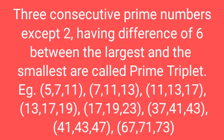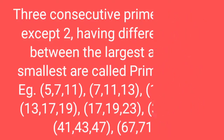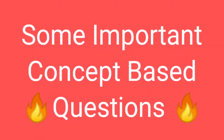Examples of prime triplets: (5,7,11), (7,11,13), (11,13,17), (13,17,19), (17,19,23), (37,41,43), (43,47,?), (67,71,73). These concepts are most important for your examination as well as for competitive examinations.